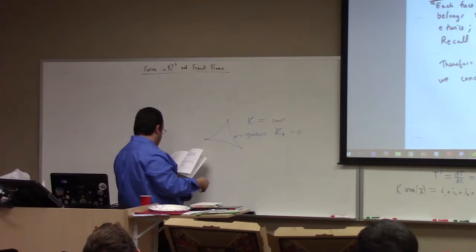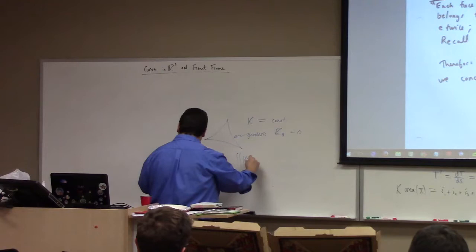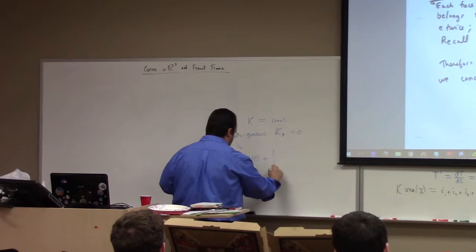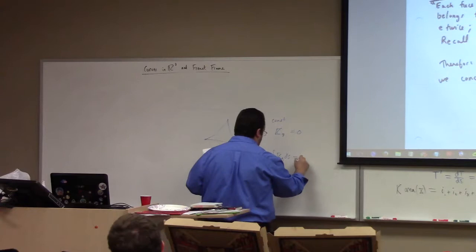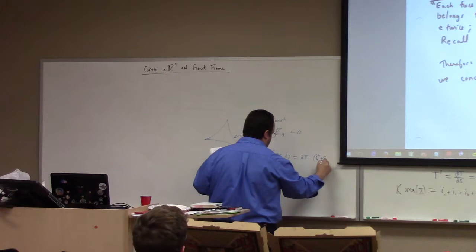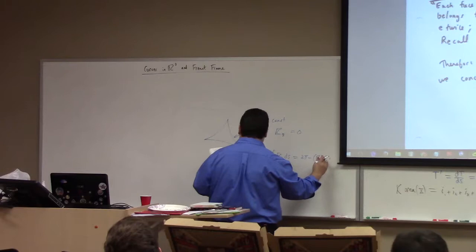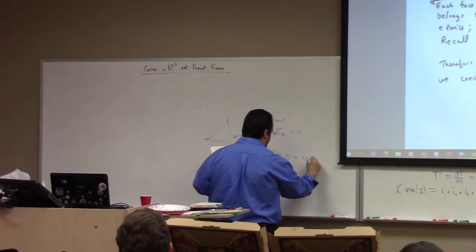Long story short, from these things we get the following theorem: the integral of the Gaussian curvature over a triangle plus the integral of the geodesic curvature over the boundary of the triangle equals the sum of the interior angles minus pi.